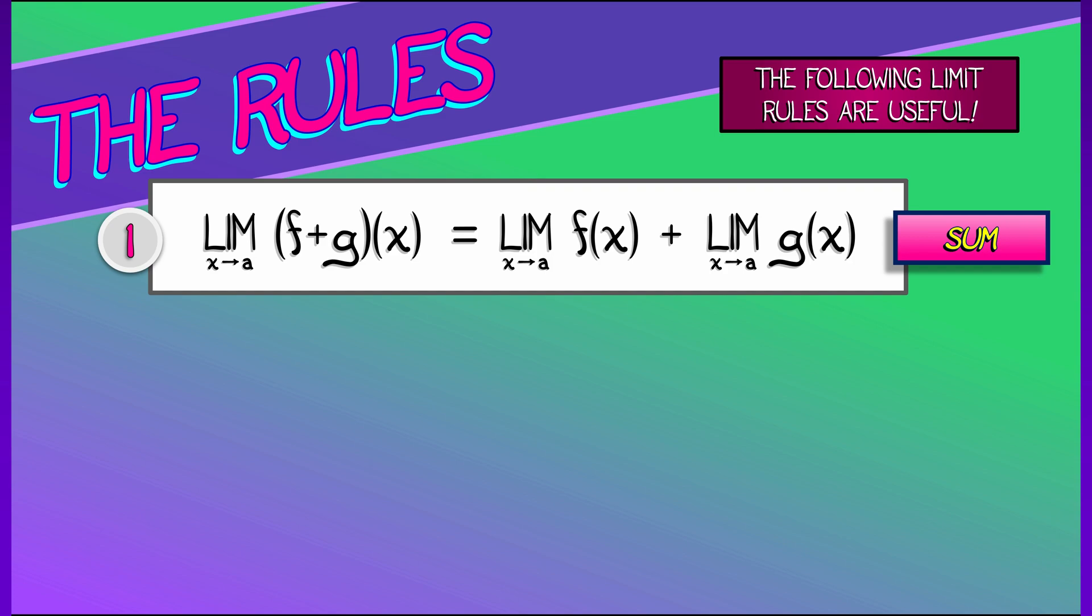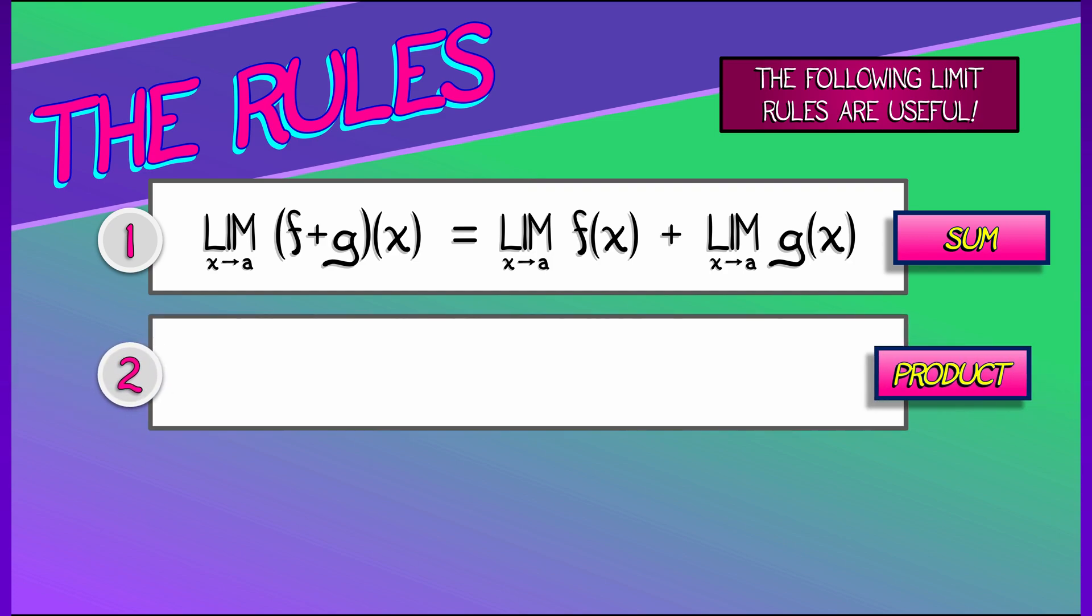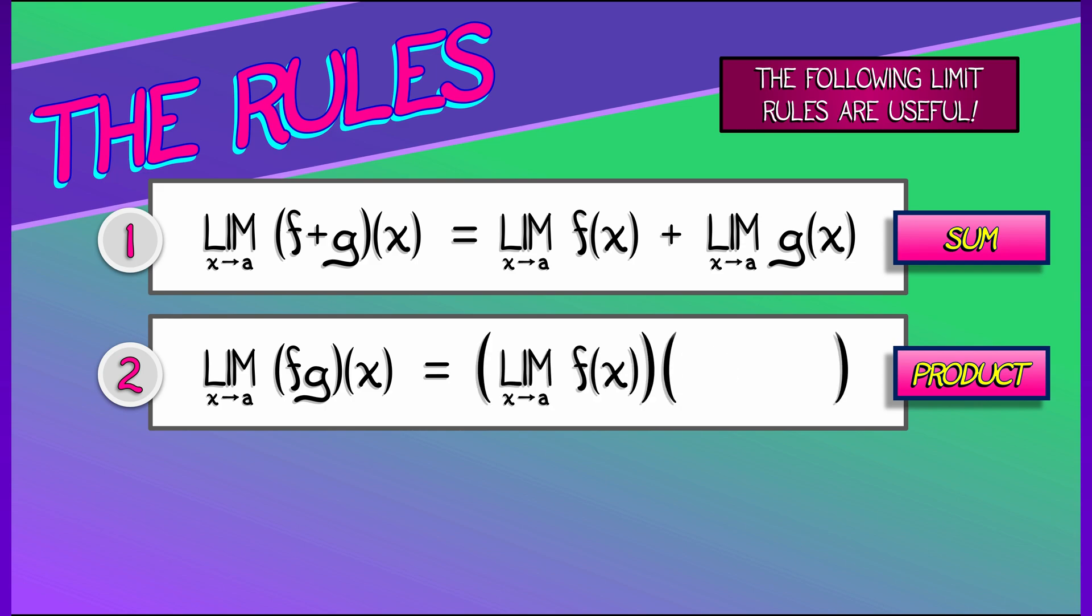Next up is a product rule. If I have the product of two functions, f and g, then the limit as x goes to a of f times g of x is really the limit of f as x goes to a times the limit of g as x goes to a.